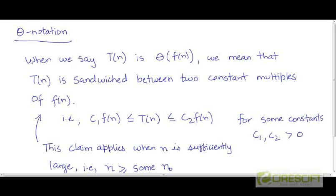So here is the formal definition of the theta notation. When we say that a function T(n) is Θ(f(n)), we mean that T can be sandwiched between two constant multiples of f.